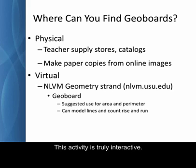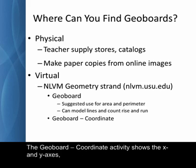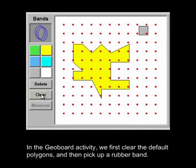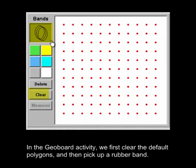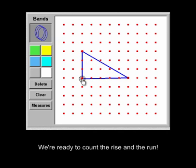This activity is truly interactive. Using your mouse, you can stretch the rubber band just like a real one. The geoboard coordinate activity shows the x and y axes, so you can use it to find the slope of a line between two points whose coordinates are given. In the geoboard activity, we first clear the default polygon and then pick up a rubber band. Let's use it to make a line. And now we stretch it into a right triangle. We're ready to count the rise and the run.